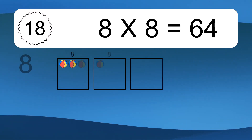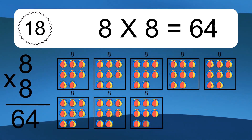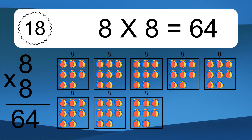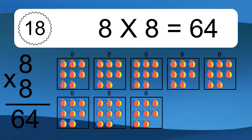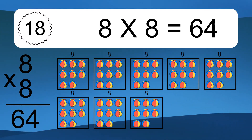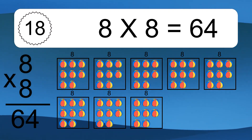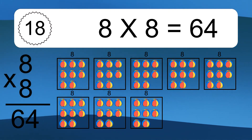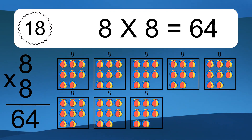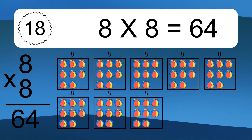8 times 8 equals what? 8 times 8 equals 64. We have 8 boxes, and each box has 8 colorful balls inside. If you count all the balls in all the boxes together, you will have 8 times 8 balls. This equals 64 balls.